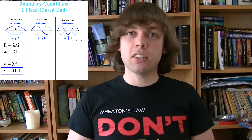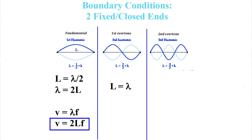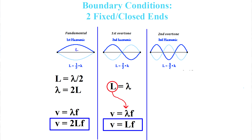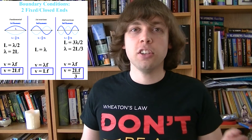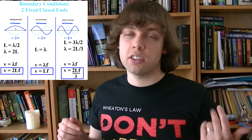For the second harmonic, the string contains one full wavelength, so lambda equals L. Substituting into the wave speed equation gives V equals LF — the equation for the second harmonic, otherwise known as the first overtone. For the third harmonic, the string contains one and a half wavelengths, so L equals three lambda over two. The same substitution gives V equals 2LF over 3, the equation for the third harmonic or second overtone. So these are the three equations for the first, second, and third harmonics for two closed ends such as a guitar string.